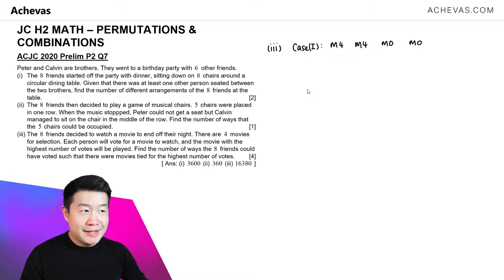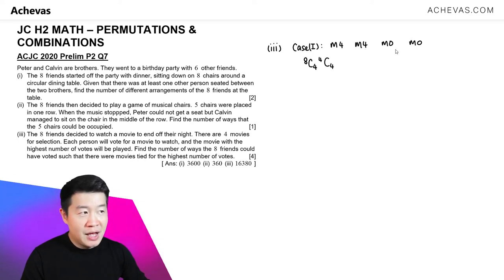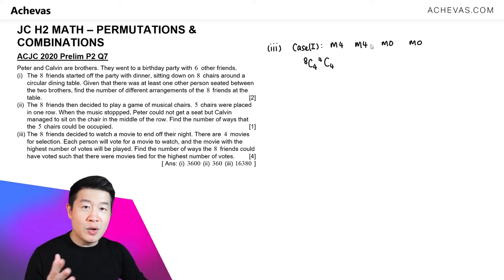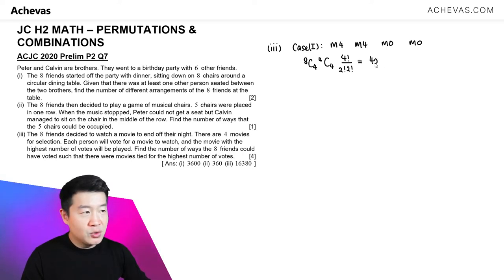In part 3, we are going to be doing cases. Case 1: one movie gets 4 votes, another gets 4 votes, and the remaining 2 movies get no votes. Out of 8 friends, we choose 4 to vote for one movie, and the rest vote for the next. For the arrangement across all 4 movies, we do 4! divided by 2! (for the two movies with equal votes of 4) and divided by another 2! (for the two movies with 0 votes). This gives 420.